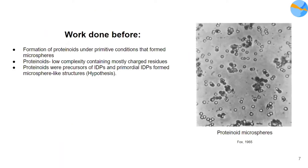Now let's look at the work that has been done before with respect to primitive precursors. Sidney Fox, a popular biochemist, was the first one to synthesize proteinoids — basically precursor proteins under conditions similar to prebiotic Earth. He mixed these proteinoids with water, which yielded small droplets known as microspheres. These proteinoids were found to be of low complexity and contain mostly charged residues, which is quite similar to IDPs.